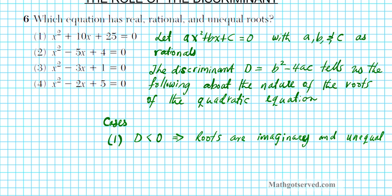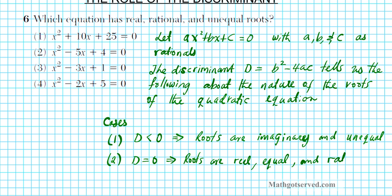Case number two: what if the discriminant is equal to zero? If the discriminant is equal to zero, then the roots are going to be real, equal — this is known as the double root — and rational. Rational numbers can be expressed as a quotient of two numbers. So if the discriminant is equal to zero, you have two real roots that are identical and rational.